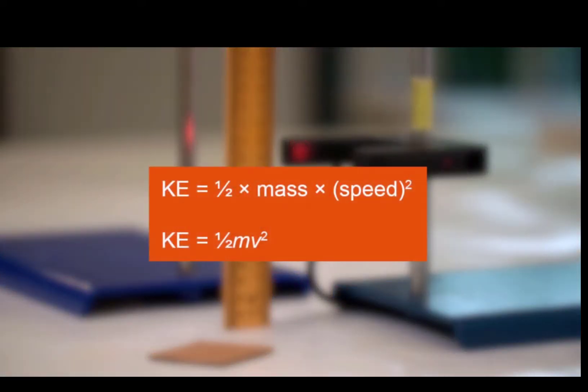The kinetic energy of an object depends on its mass and speed. By finding the speed of the card just before it hits the ground, its kinetic energy can be determined.